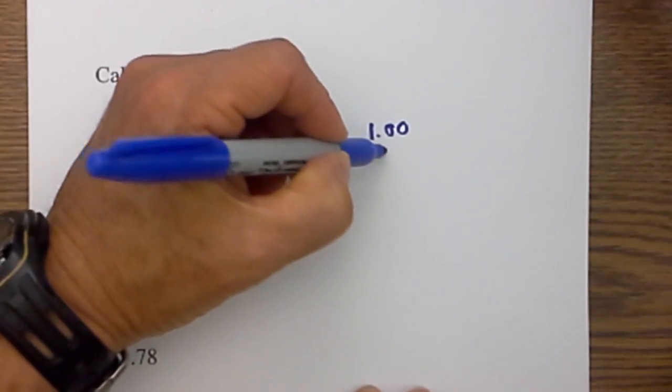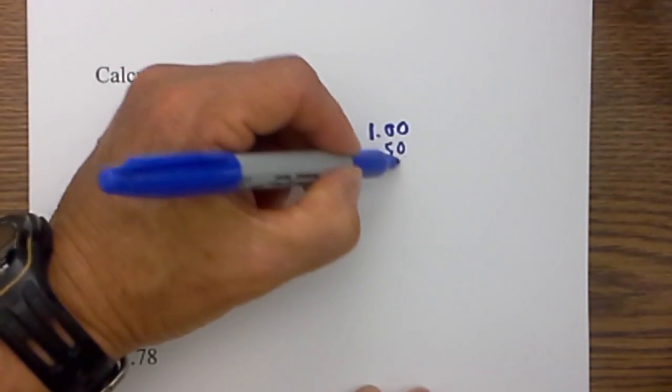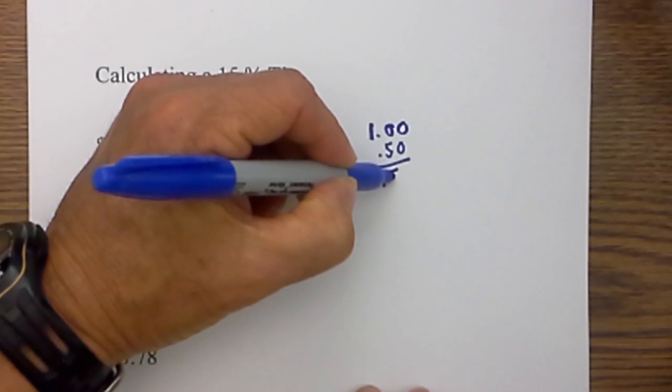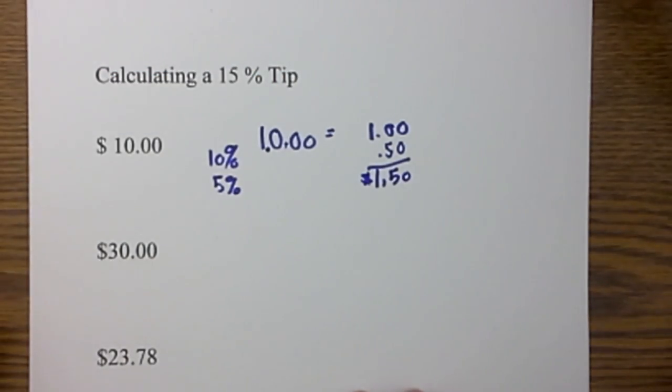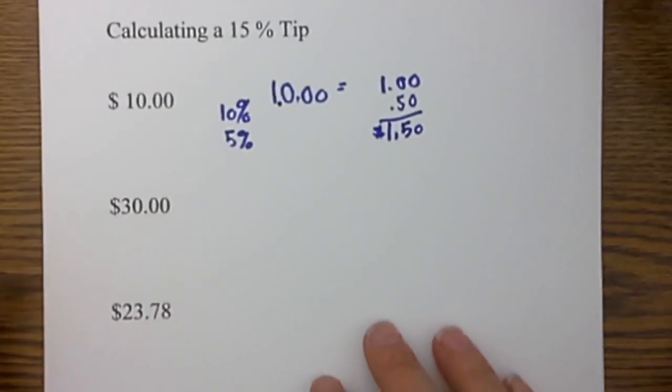One half of a dollar is 50 cents, so it would be $1.50 for $10, starting with a very simple one.